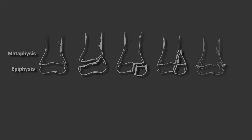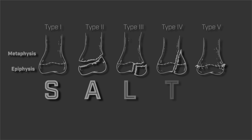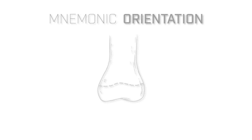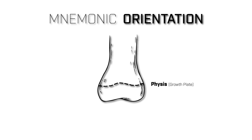Now that we have a basic idea of the anatomy of our long bones, here are the different types of Salter-Harris fractures. They are classified from class 1 through class 5. There is a mnemonic to help you remember the different classifications — it's easy because the mnemonic is SALTER. The distal portion of the bone is always facing downward, or inferior to the growth plate, and the metaphysis is always superior to the growth plate. This is important because the mnemonic depends on this orientation.